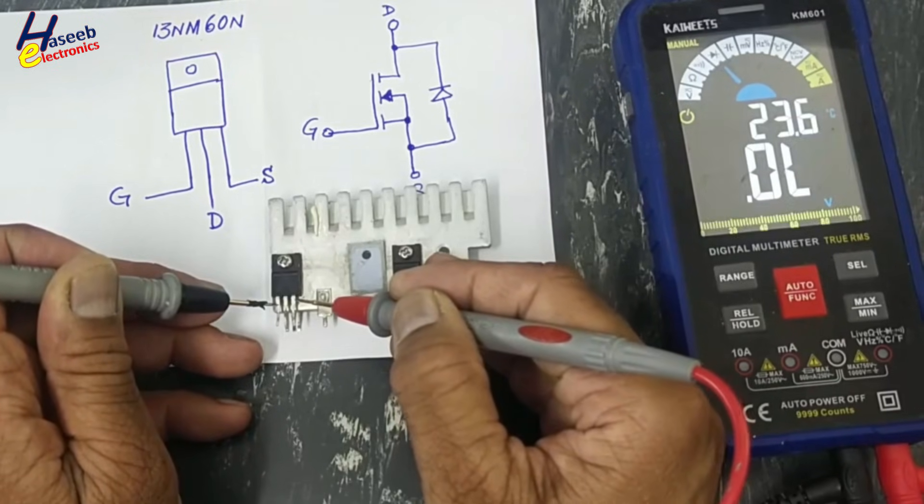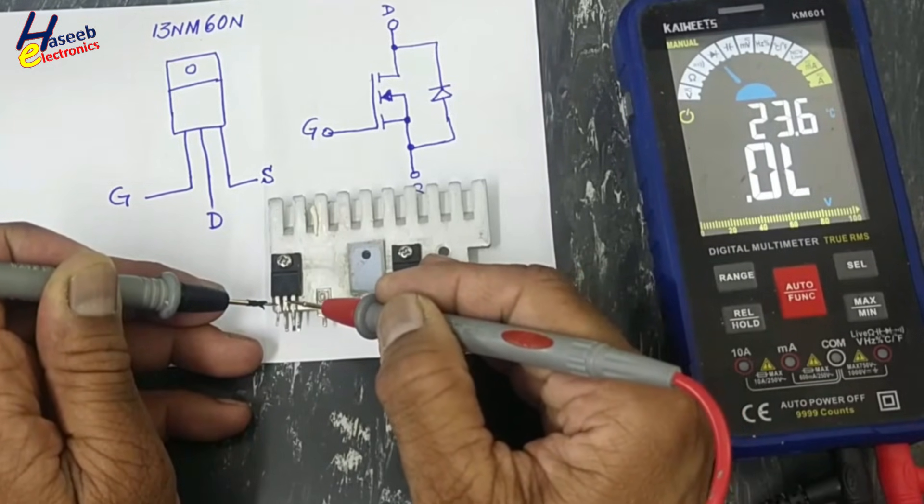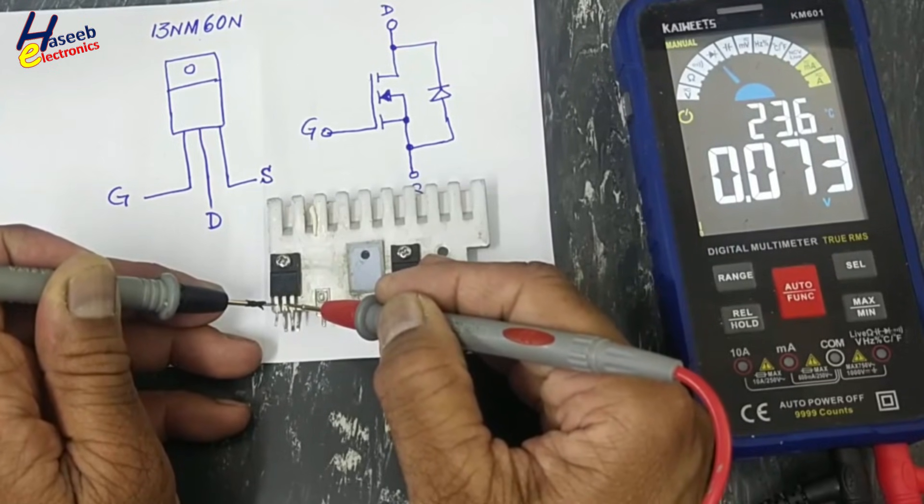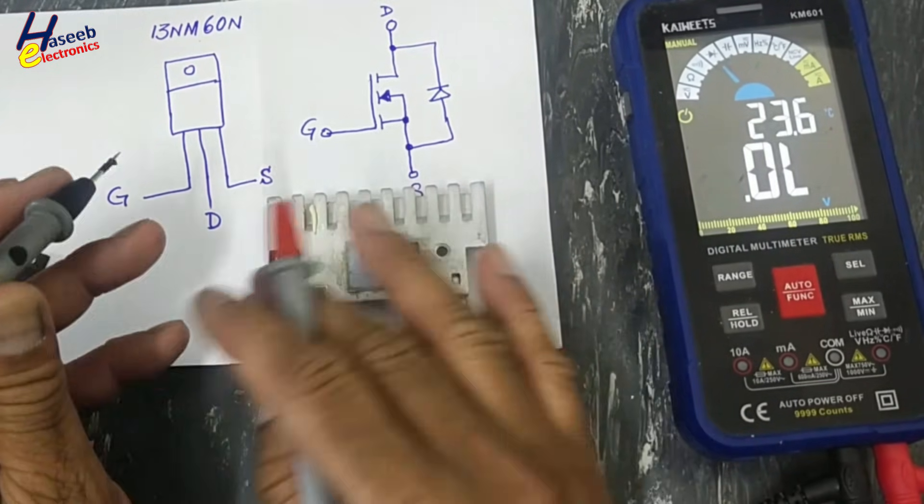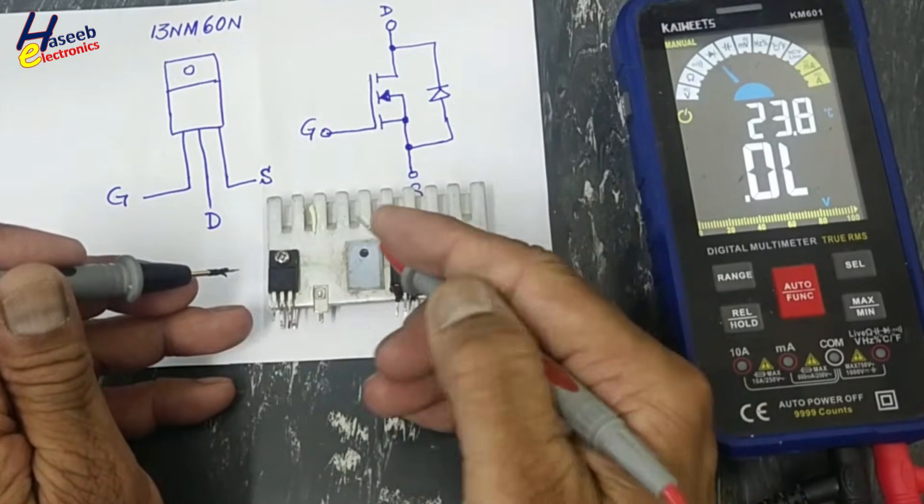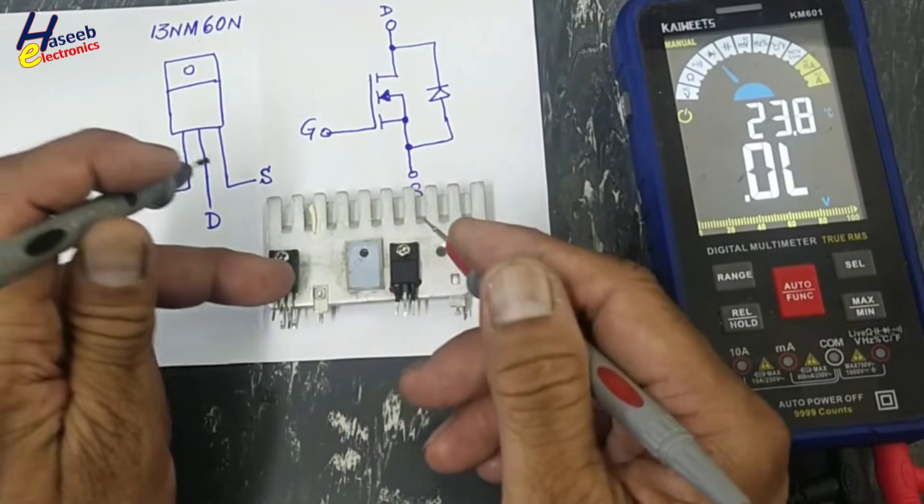It is giving short circuit between source and gate. That is not a good indication. Drain and gate - short circuit. So this MOSFET is damaged permanently. All three pins are short circuit internally, so it is bad.